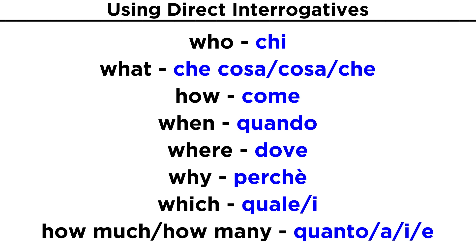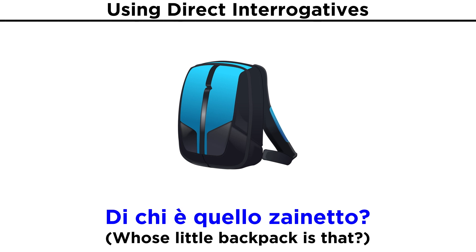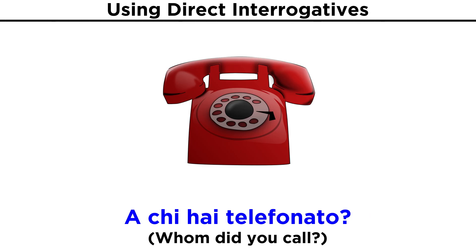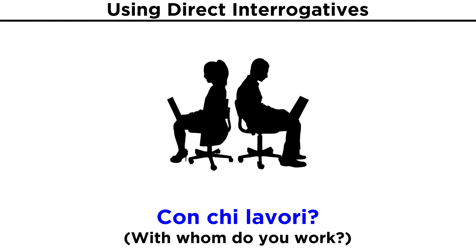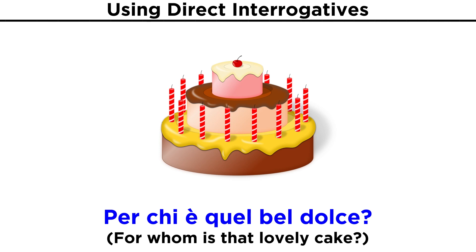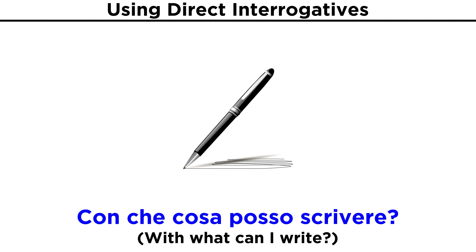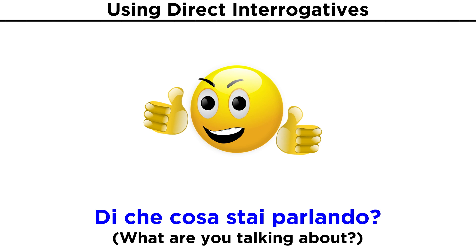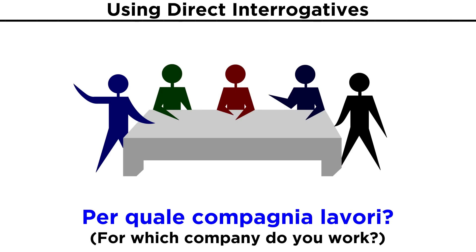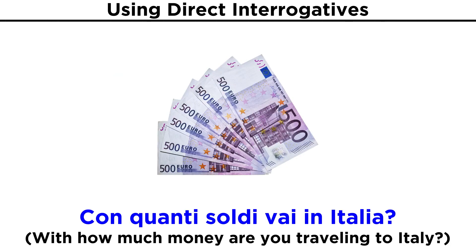So now we know how to ask questions regarding who, what, how, when, where, why, which, and how many. To wrap things up, let's recall that interrogative pronouns and adjectives can easily be used with prepositions. Here are some examples: Di chi è quello zainetto? A chi hai telefonato? Con chi lavori? Per chi è quel bel dolce? Con che cosa posso scrivere? Di che cosa stai parlando? Per quale compagnia lavori? Con quanti soldi vai in Italia?